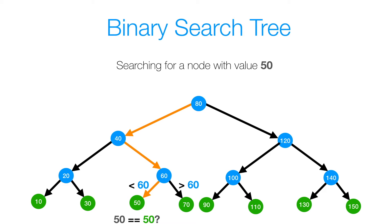Then finally, we ask if 50 is equal to 50, and 50 is equal to 50. So we've found the node with value 50 that we're searching for, and we're done.